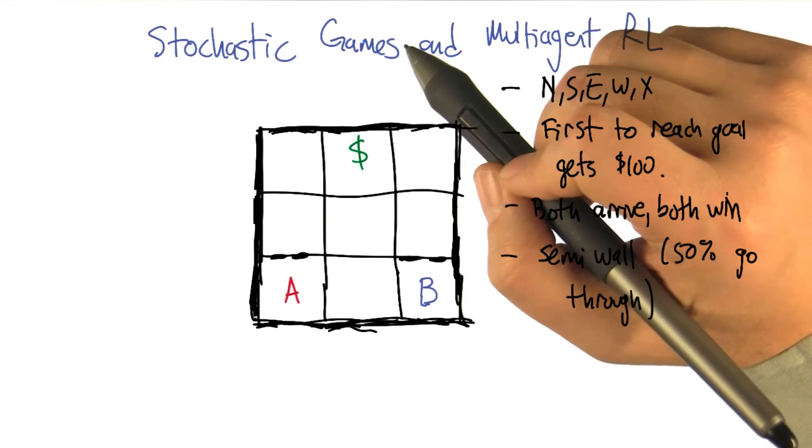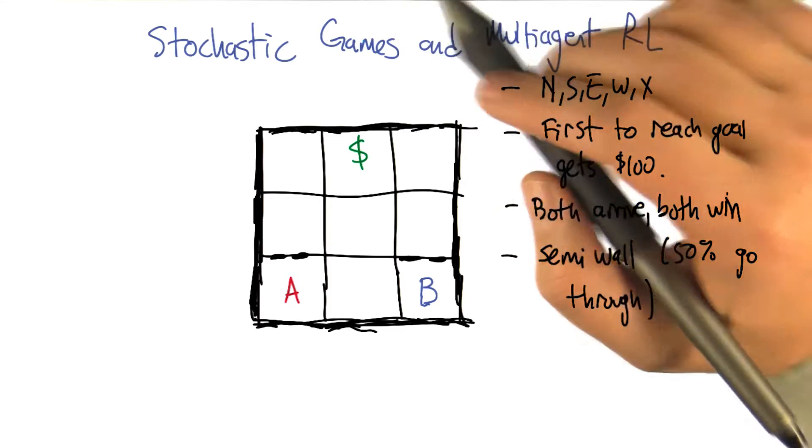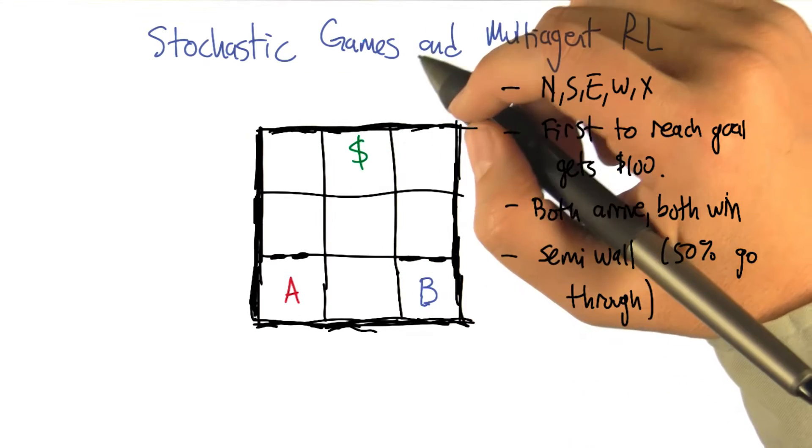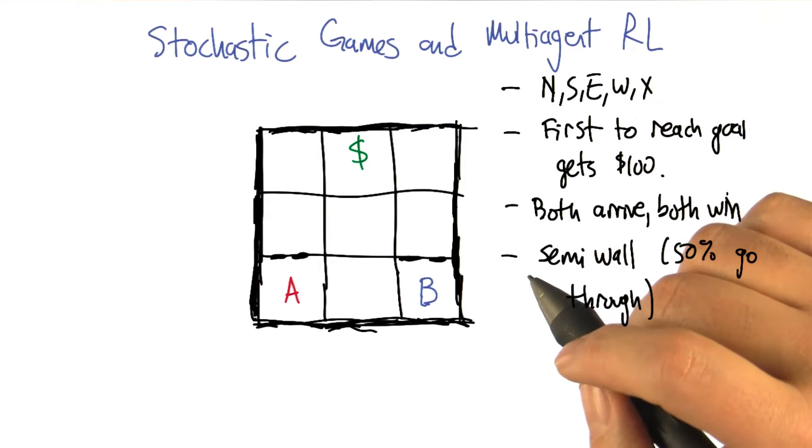I like the name Markov game better, but I use stochastic games because that's what other people call it, and sometimes it's good to use words that other people use. What stochastic games give us is a formal model for multi-agent reinforcement learning.